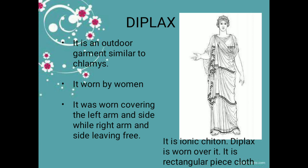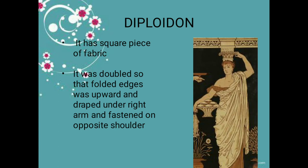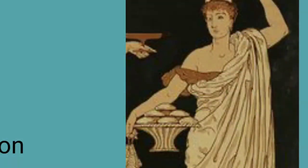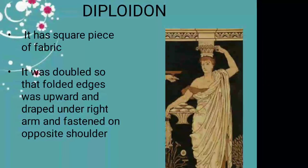Next is the diplodion. Unlike the chiton and himation which are rectangular pieces of cloth, the diplodion is a square piece of fabric. It was doubled — folded so that the folded edge was upward. It was draped under the right arm and fastened on the opposite (left) shoulder. The diplodion is also a basic garment of women.